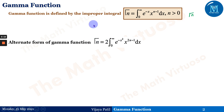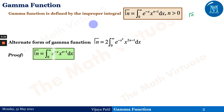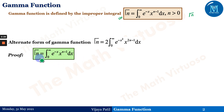Let us prove this. It is straightforward using integration. To prove this alternative definition, we make use of the standard definition: gamma of n equals the integration from 0 to infinity of e to the power minus x, times x to the power n minus 1, dx.